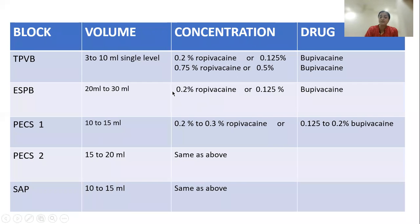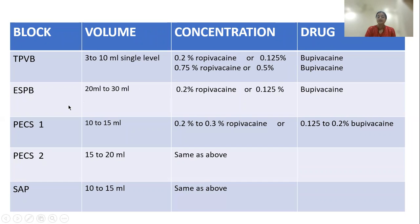For drug volume and concentration: if using the paravertebral block as a sole agent at one level, give 10 ml of either 0.2% ropivacaine or 0.1 to 0.5% bupivacaine for pain relief, and 0.75% ropivacaine or 0.5% bupivacaine if used as a sole anesthetic agent. For the erector spinae plane block, since it is a fascial plane block with greater spread, give higher volumes — 20 to 30 ml of 0.25% ropivacaine or 0.1 to 0.5% bupivacaine.